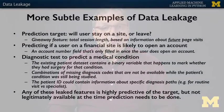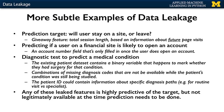A second example of leakage might involve trying to predict if a customer on a bank's website was likely to open an account. If the user's record contains an account number field, it might normally be empty for users still in the process of exploring the site, but eventually is filled in once the user does open an account. Clearly, the user account field is not a legitimate feature that should be used in this case, because it may not be available at the time the user is still exploring the site.